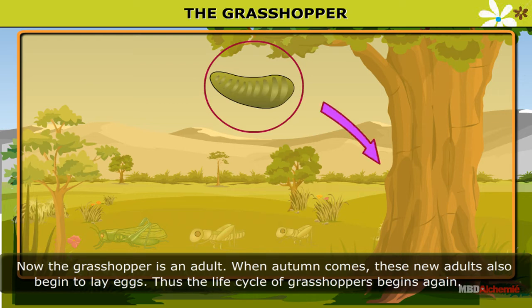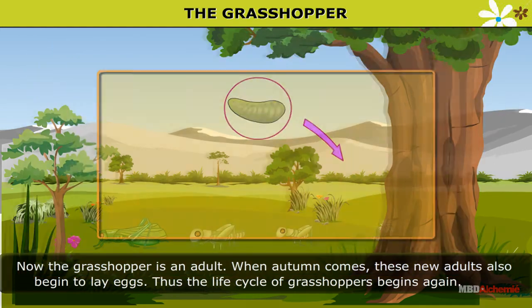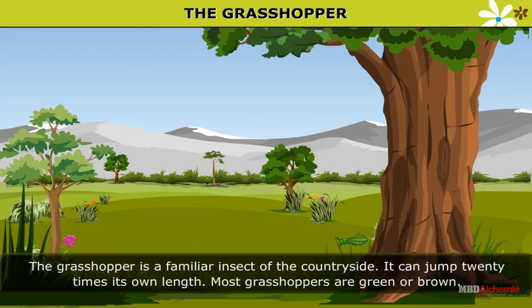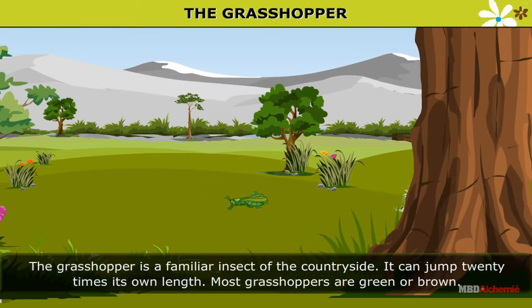When autumn comes, these new adults also begin to lay eggs. Thus, the life cycle of grasshoppers begins again. The grasshopper is a familiar insect of the countryside.